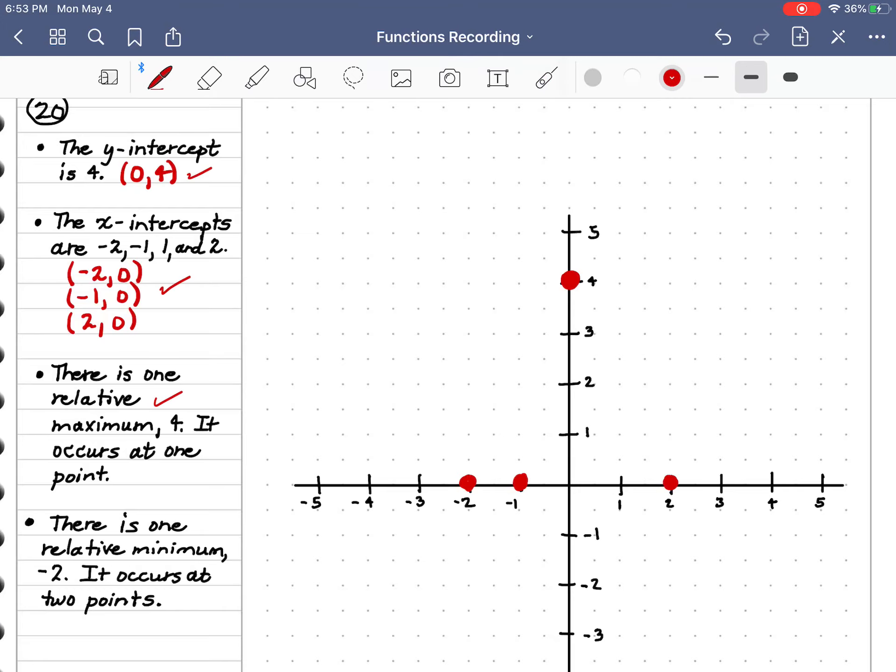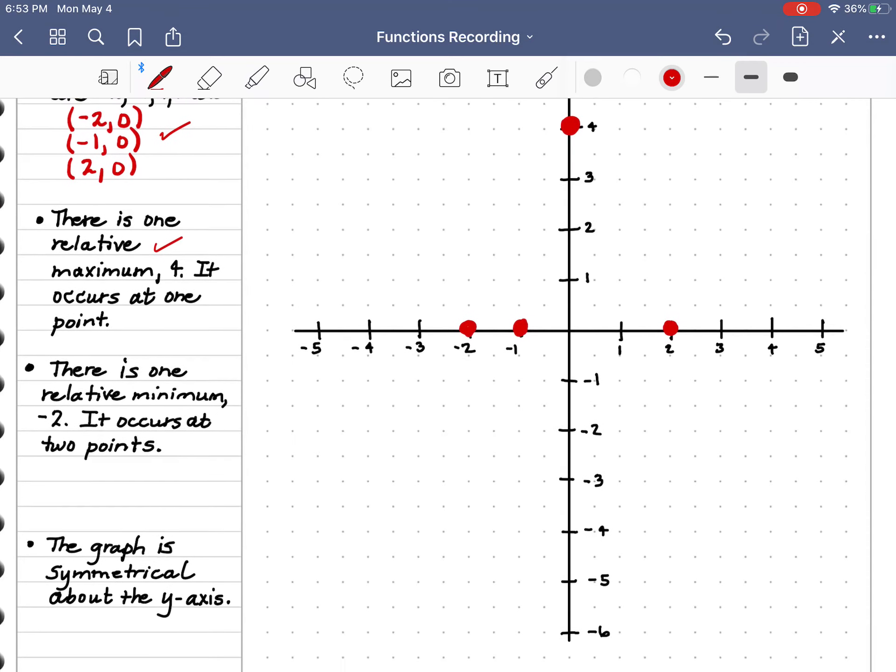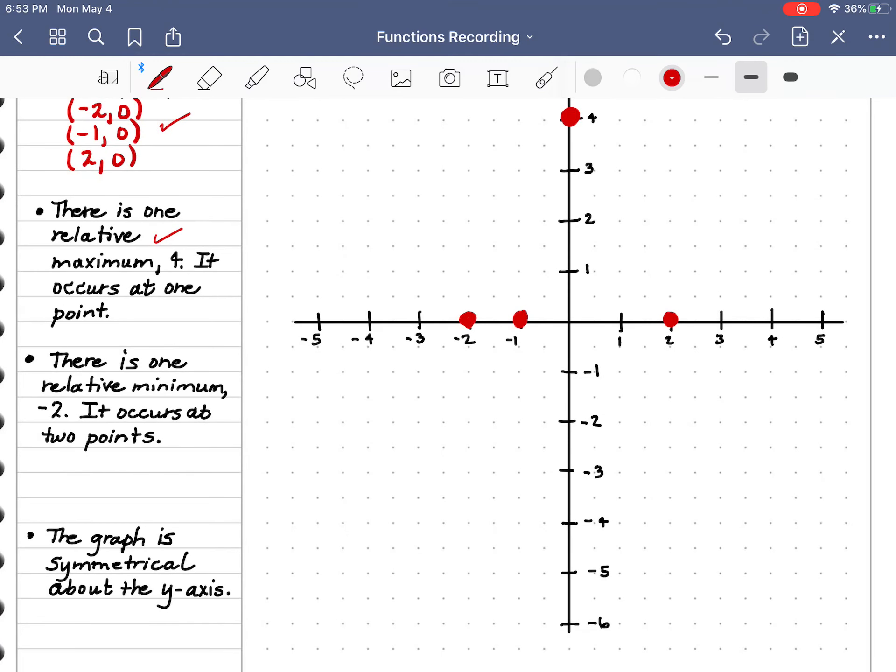There is one relative minimum at negative 2, and it occurs at two points. Now remember, a minimum is a y-function. Actually, I don't know that it's at zero. It's a y-issue. So we know that at two points, we're going to have to put something here at negative 2. We just don't know where yet.